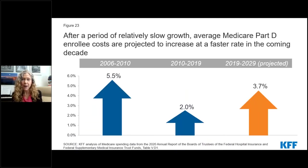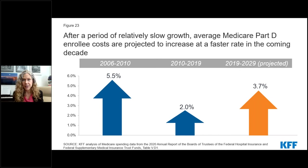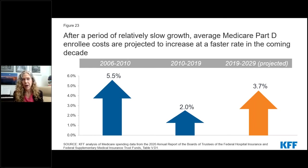On a per capita basis, we are expecting higher Part D spending in the coming decade than we experienced in the previous one, which has implications for Medicare spending overall, as well as for beneficiaries in terms of their out-of-pocket drug costs, affordability, and access to medications — and for taxpayers, because income tax revenue goes to fund a portion of Part D program spending. This may also lend some urgency to the discussions around policy proposals to lower Medicare prescription drug spending.